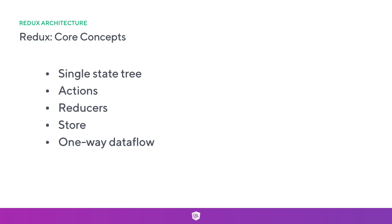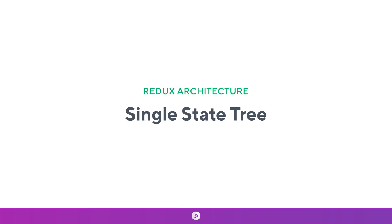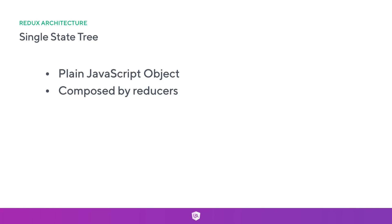Number one is the single state tree. We covered this in the previous video and discussed the concepts of a single state tree, how we can ask for properties on our state tree, and the idea behind how we could actually use it. A single state tree is essentially just one big plain JavaScript object. It's not some mystical thing - everything is kept as one big object, and it's composed by reducers.